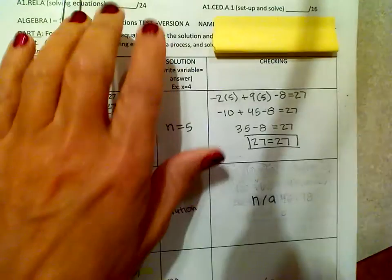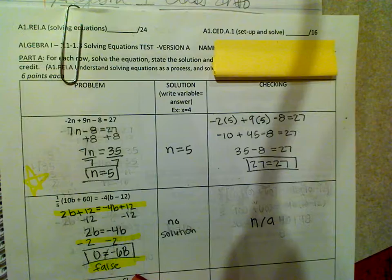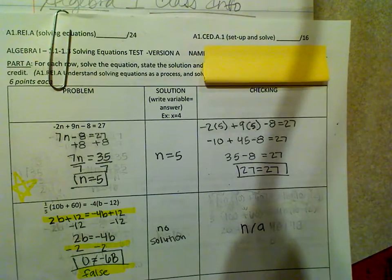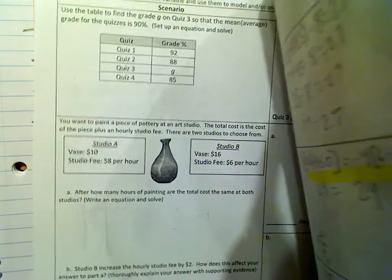Okay, now here there's two separate grades that are going to happen in the gradebook. So we have one that's solving equations, equations are already set up and they're solving it, and then another one that is set up and solved, so setting up the equations and solving them. So those are the word problems, so I had two different grades.